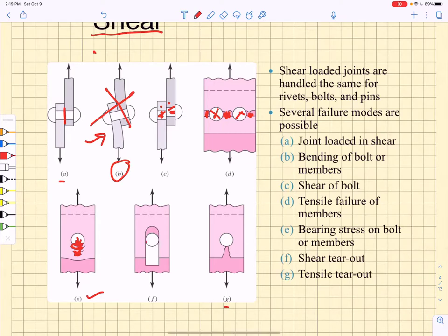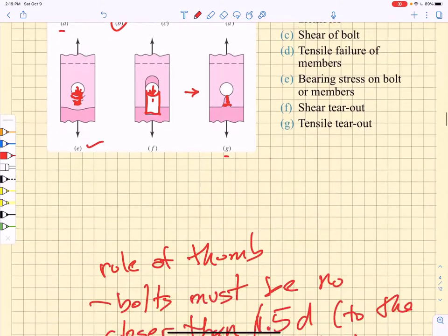We can have shear tear-out where an entire plug of material is pulled out. The other thing that can occur is a fracture, a ductile fracture of the ligament below the bolt, which is called tensile tear-out. Those are the states that we look for.